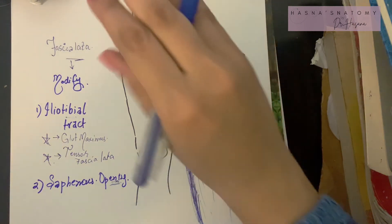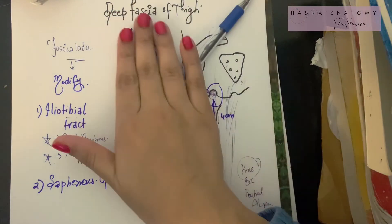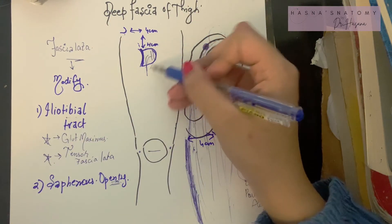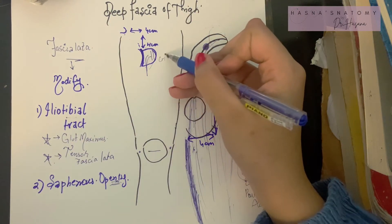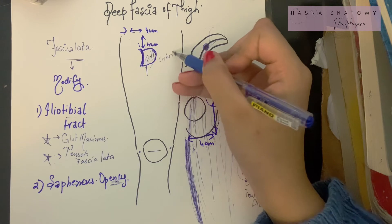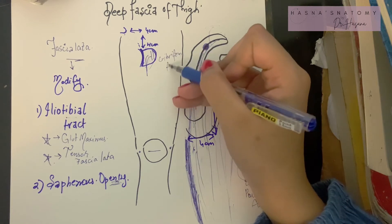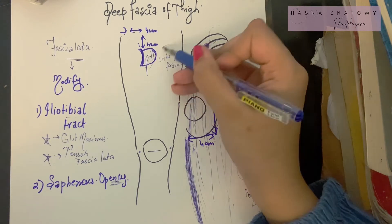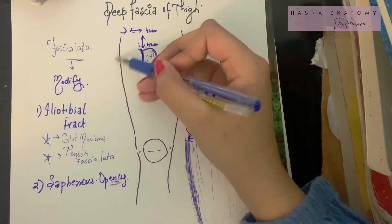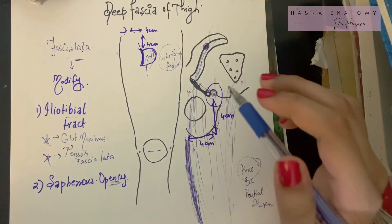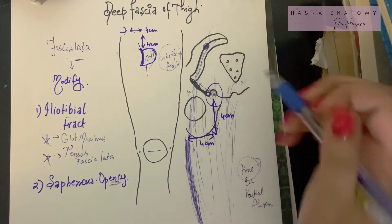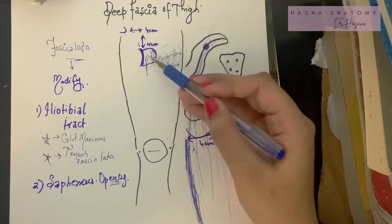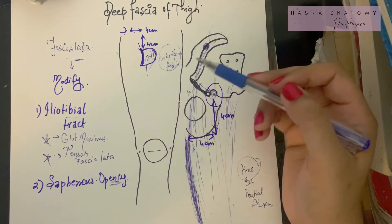The saphenous opening is covered by a fascia known as the cribriform fascia, which can itself be considered a modification of the fascia lata — essentially a fourth modification that closes up the saphenous opening.